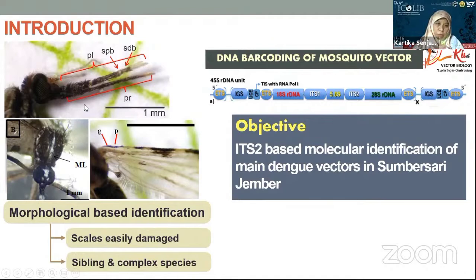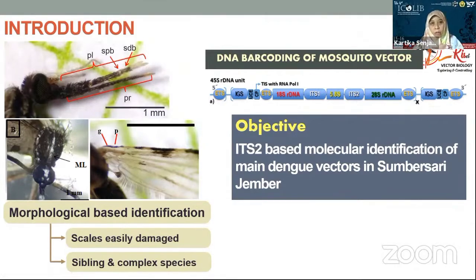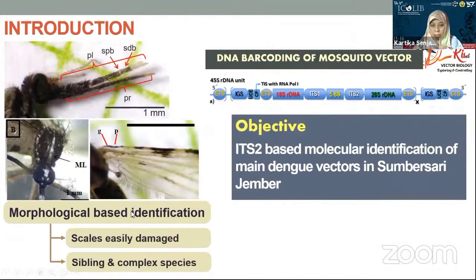The simplest way to identify a mosquito, especially a dead mosquito, is by morphological-based identification — for example, using features like the head, white scales, proboscis, and wings. However, mosquito white scales can be easily rubbed off or damaged during the sampling process. Another problem is the wide diversity of mosquito species, especially sibling species and species complexes, which contain individuals with overlapping morphological identity. This makes morphological-based identification a complex problem.